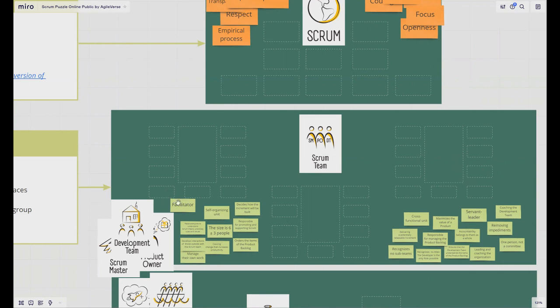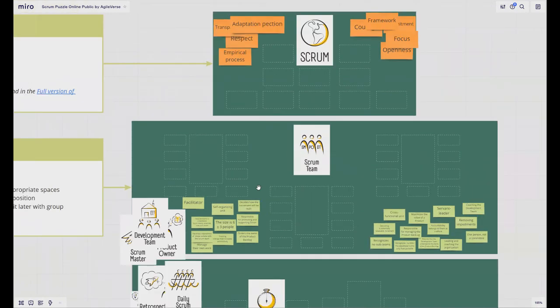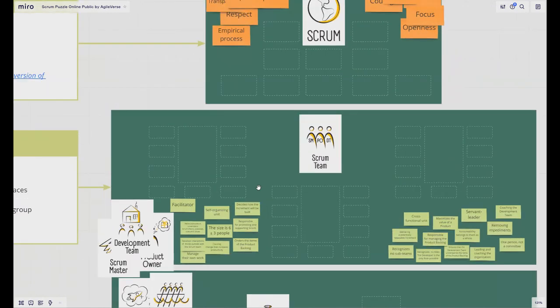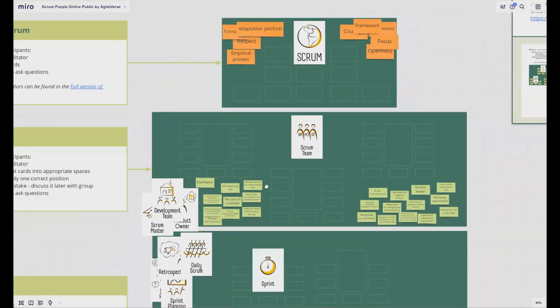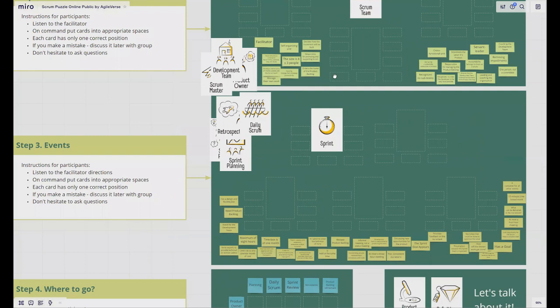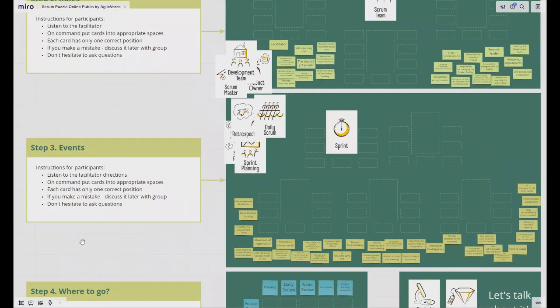After this, you and the group should discuss why it is in this place and what does it mean. If you find some mistake, just discuss where it should be, place it in the right position and discuss why it should be there. That's all about the roles section.